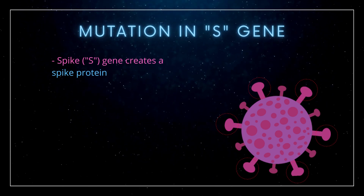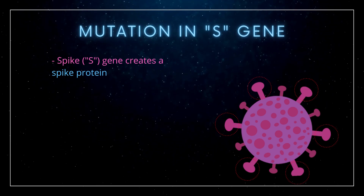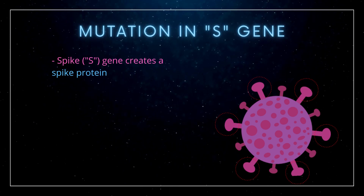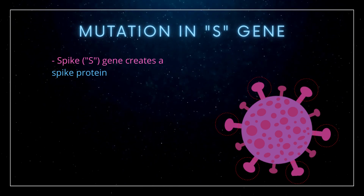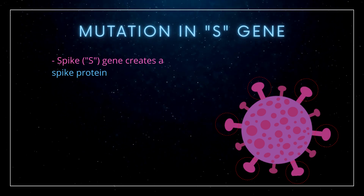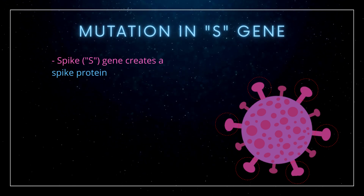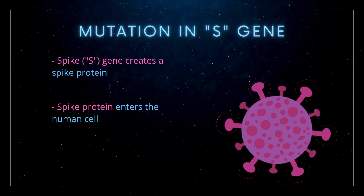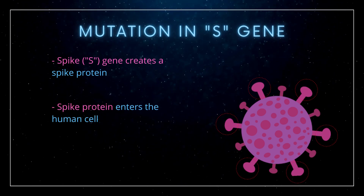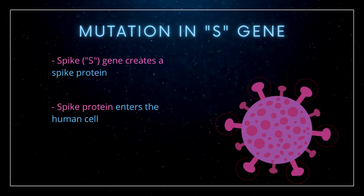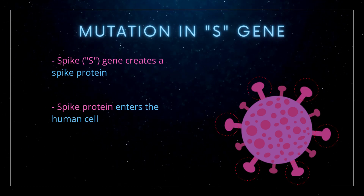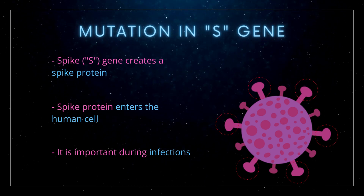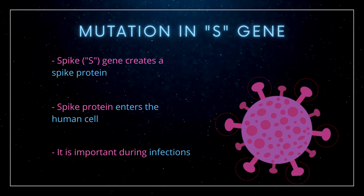A major difference between the two is their mutation in the S gene. The spike, or S gene, creates something called a spike protein. The spike protein is found on the outside of a virus — in this case, on the outside of the SARS-CoV-2 virus. The spike protein is essentially responsible for entering the human cell by penetrating the host cell. So we can see that the spike protein is a very important component of the virus and plays a key role during the infection process within our body.